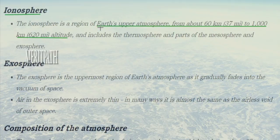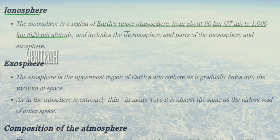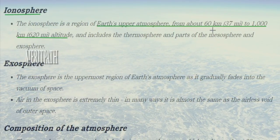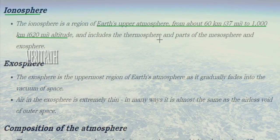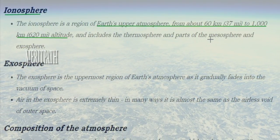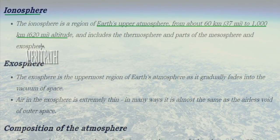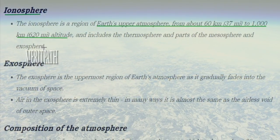The ionosphere is a region of Earth's upper atmosphere, from about 60 kilometers to 1000 kilometers altitude. It includes the thermosphere and parts of the mesosphere and exosphere.